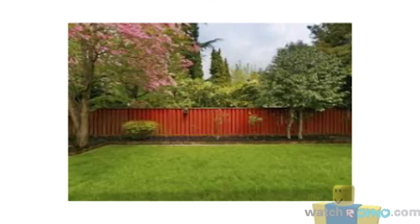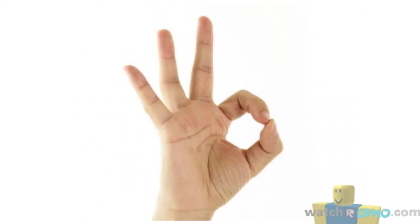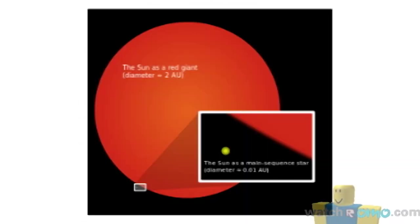After it puffs up, it'll be known as a red giant. Red giants are red because its outside is cool from around 9,000 to 3,000 Fahrenheit as it expands. For a star, red means cool.